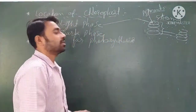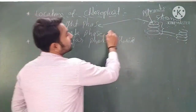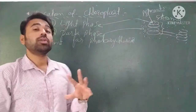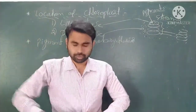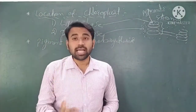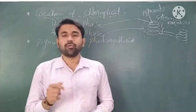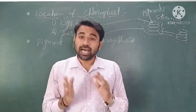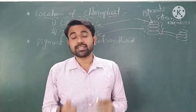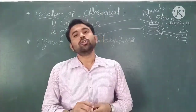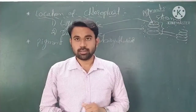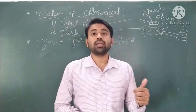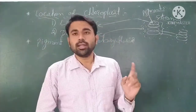Where does the dark phase occur? The dark phase occurs in the stroma, because in the dark phase there is no requirement of light. Light is not required for the dark phase. That is why the dark phase occurs in the stroma of the chloroplast.